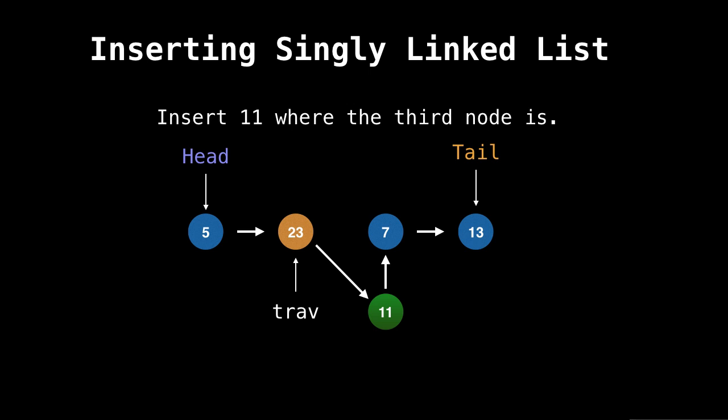And the next step is to change 23's next pointer to be 11. Remember, we have access to 23's next pointer, because we have a reference to it with the traverser. And now we flatten out the list, we can see that we've correctly inserted 11 at the right position, and we're done.